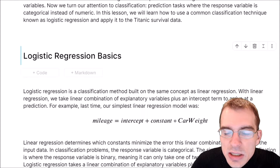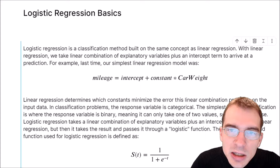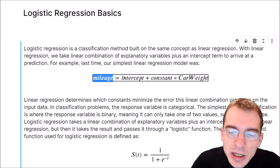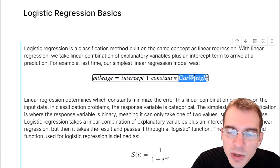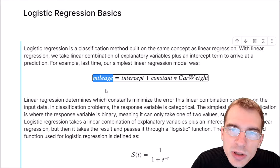Logistic regression gets its name from the fact that it is built on the same basic principle as linear regression. It's going to take a linear combination of some explanatory variables to explain some dependent variable. For instance, in the last lesson we had a dependent variable that was gas mileage, explained by an intercept term plus a coefficient times a variable — in that case, the weight of a car.